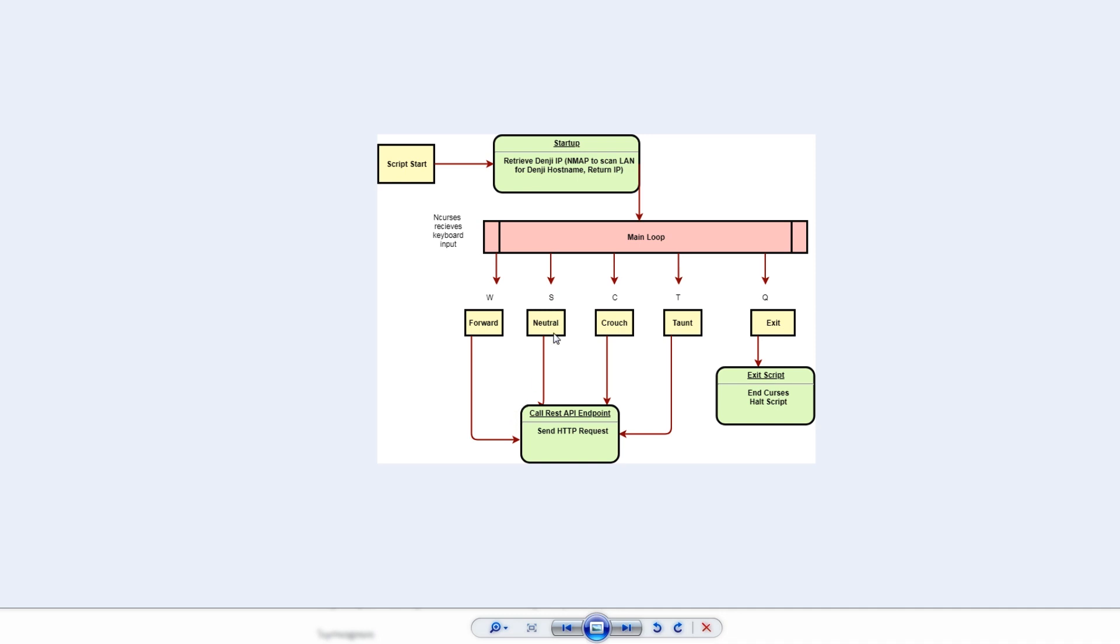ESC is mapped to the neutral endpoint, C to crouch, T to taunt, and then Q—when you hit Q, it will just end this loop and exit the script. So pretty basic stuff.